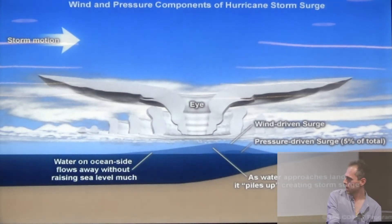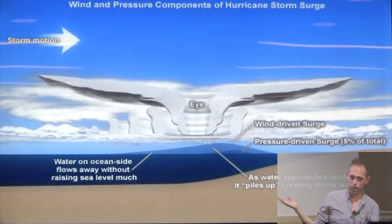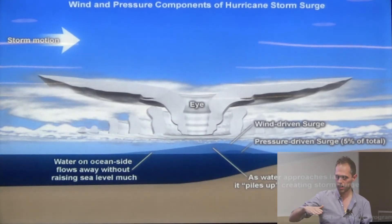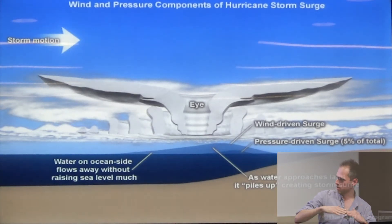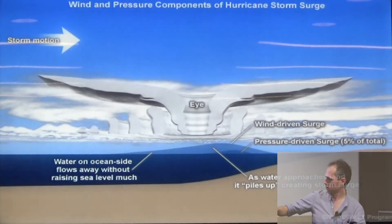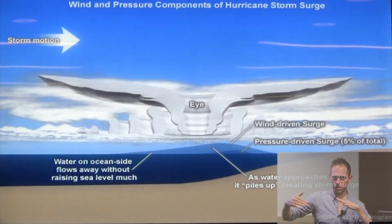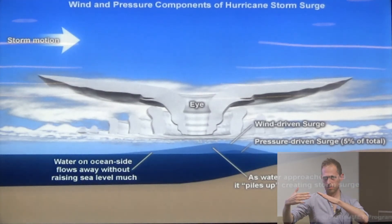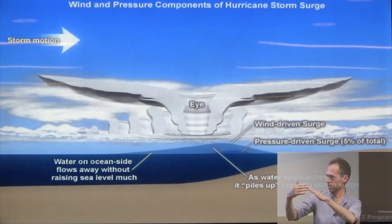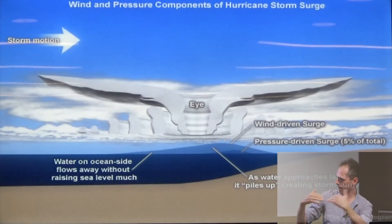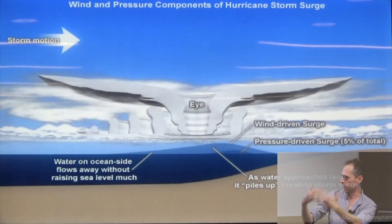It's basically like a mini tsunami — you've got this rise in sea level, and as these large waves approach the shoreline, it slows down, gets bigger, and just keeps coming. It's a relentless onslaught of water, and it can be quite large.